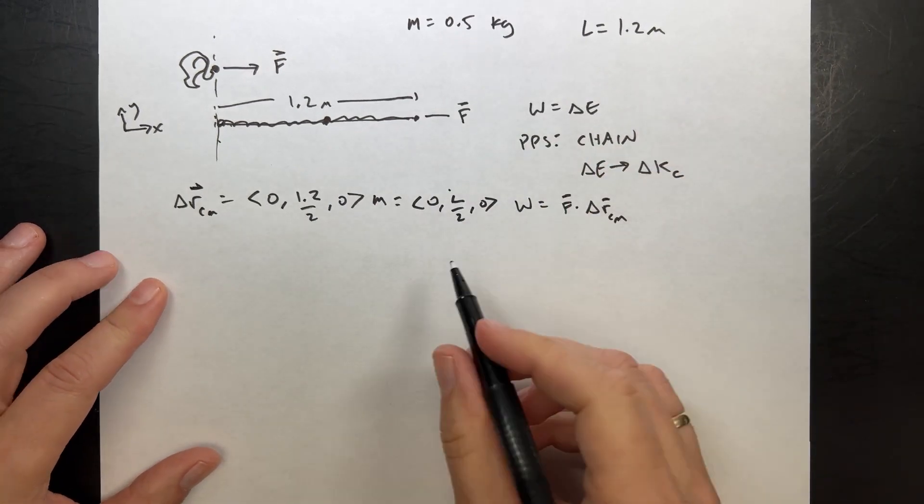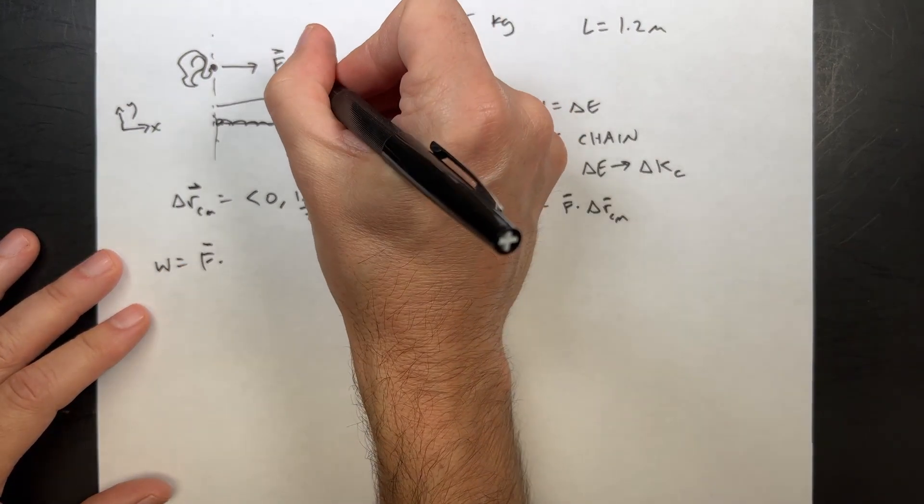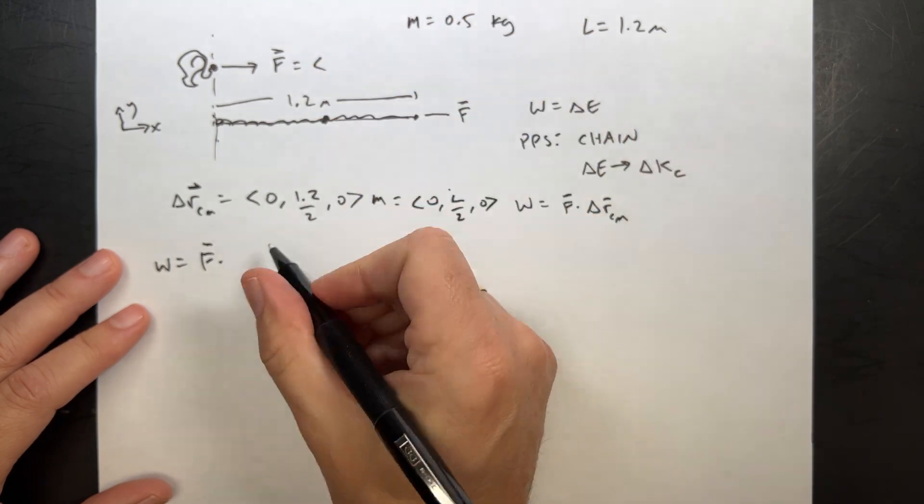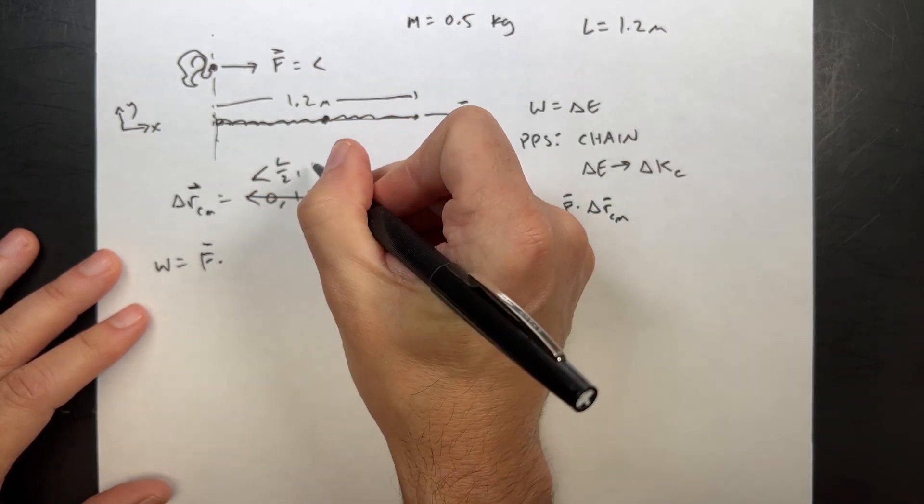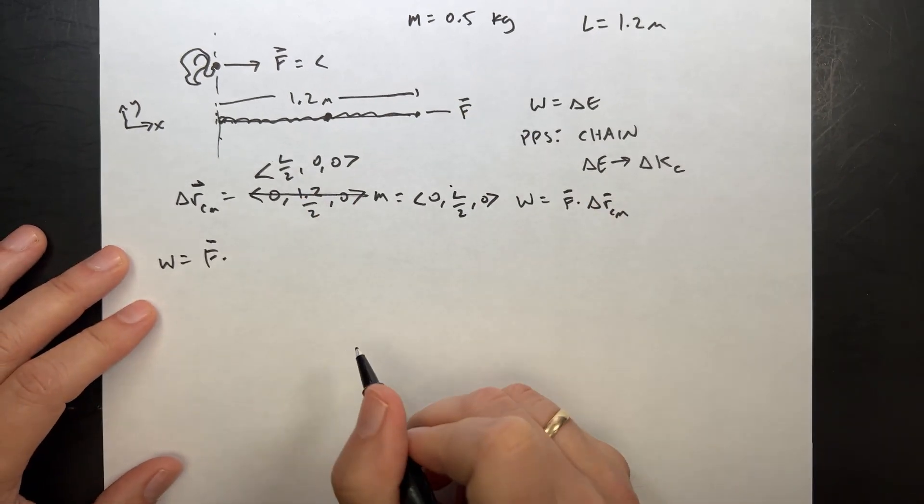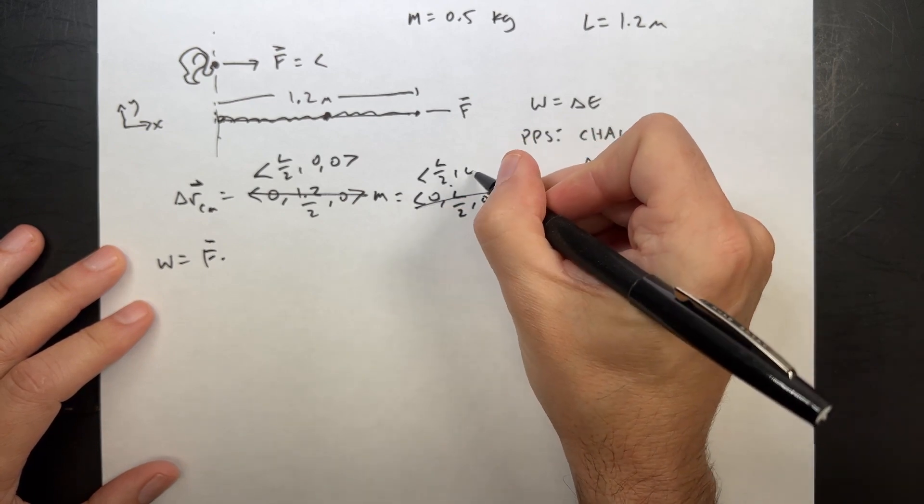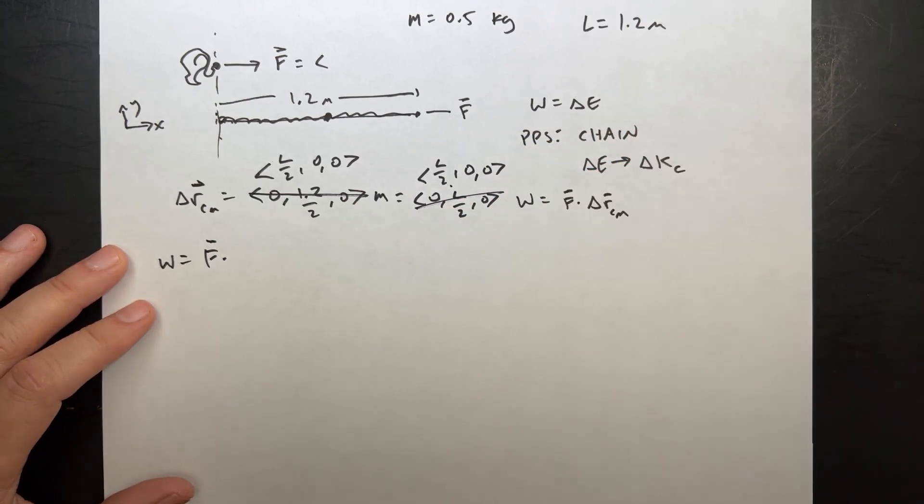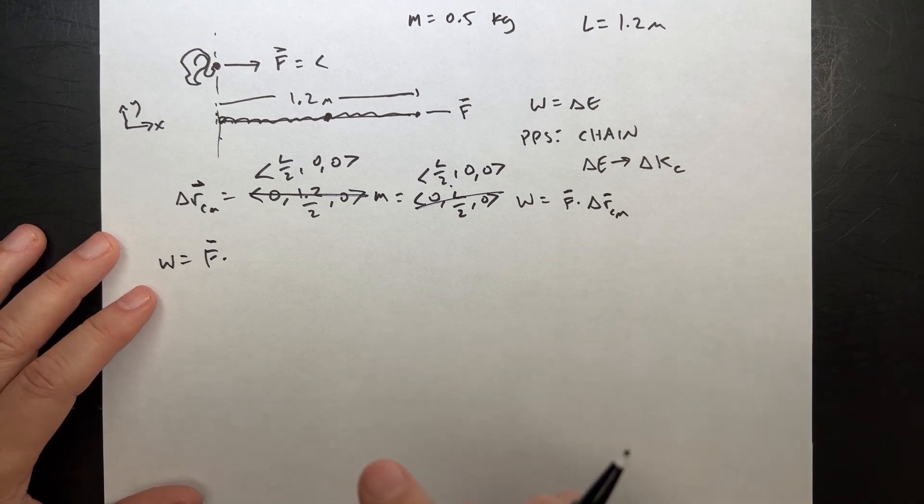So the work done is going to be my force F, which is in the x direction. Why did I put that in the y direction? I'm L over 2, 0, 0. I don't know what I was thinking. Sometimes you just don't think. And if this is Top Gun 2, that's good, right? Don't think, just do. But here you really should think.